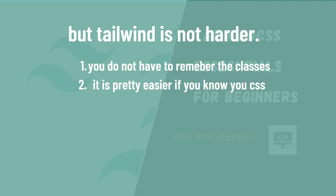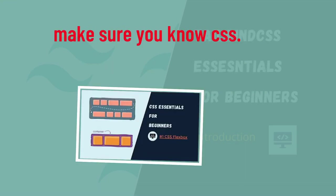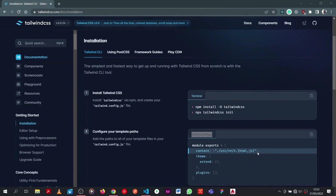Tailwind CSS also has a design system so you can properly manage your typography, text sizing, and everything. It's a great library to try. This is pretty easy if you already know CSS, but if you don't, make sure you know the CSS essentials — I have a course on that. If you know CSS already, let's get started.